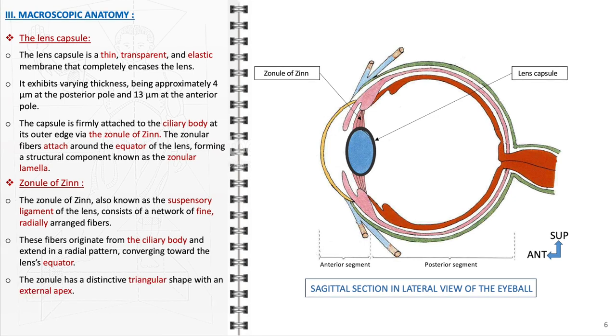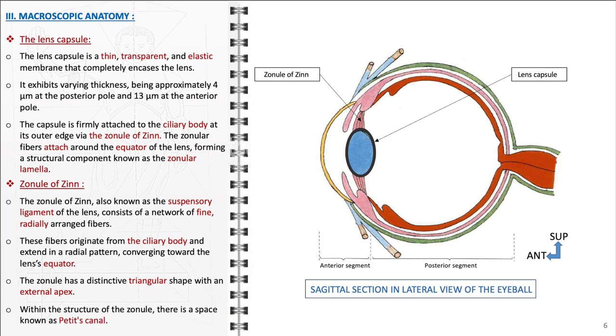The zonule has a unique triangular shape with an external apex. This geometric design is essential for distributing the forces applied to the lens evenly, ensuring balanced and precise adjustments in lens curvature. Within the structure of the zonule lies Petit's canal, a space that plays a role in the intraocular fluid dynamics. This canal, located between the zonular fibers, is involved in the circulation of aqueous humor and contributes to maintaining the eye's internal pressure.